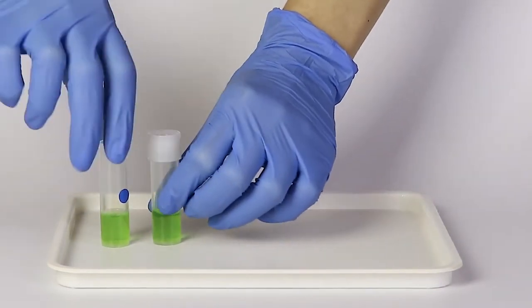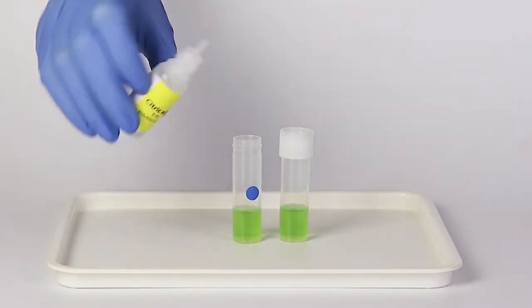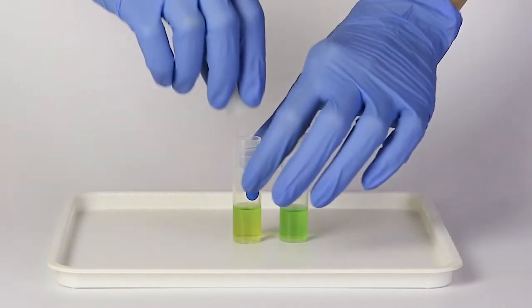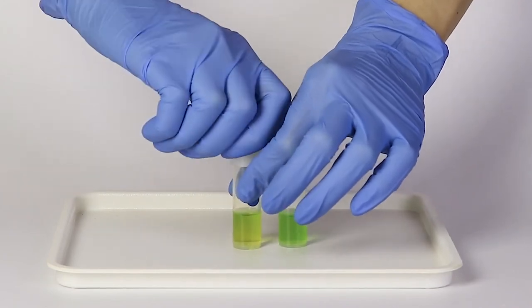Cap the vial without the blue sticker. Add 15 drops of the citric acid solution to the vial with the blue circle. Then cap the vial and shake it.